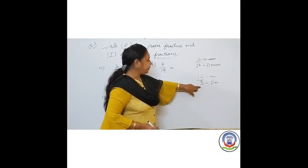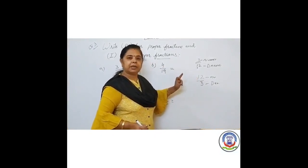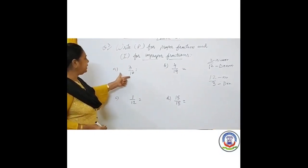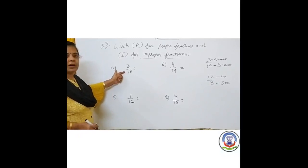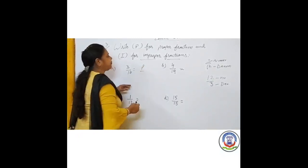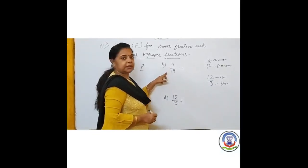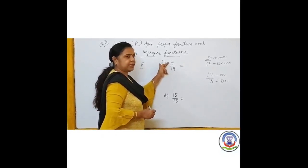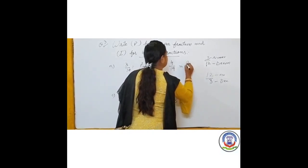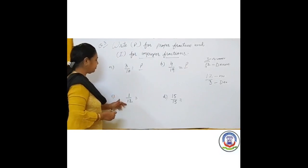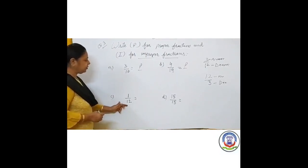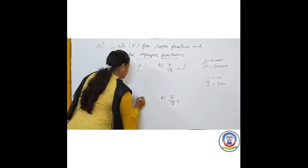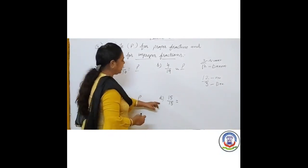Now we will write the fractions. Number (a): 3 upon 10 — numerator is 3 and denominator is 10, so this is a proper fraction; we write P. Next, number (b): 4 upon 19 — numerator is 4 and denominator is 19; 4 is smaller than 19, so this is a proper fraction; we write P. Number (c): 1 upon 12 — numerator 1 is smaller than denominator 12, so we write P.